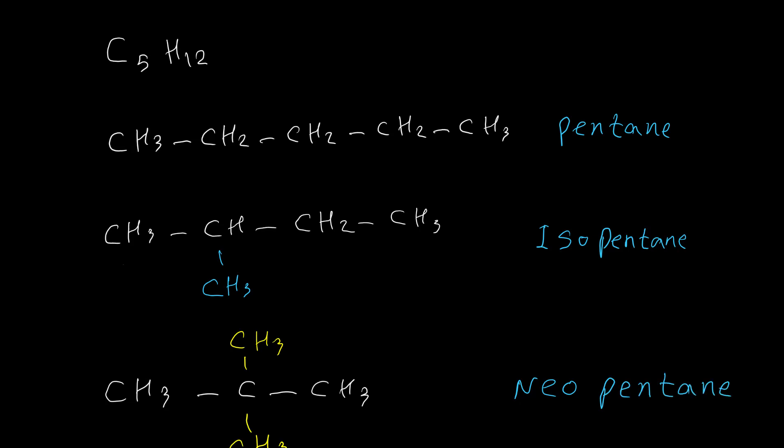So the first three alkanes have no isomers, butane has two isomers, and pentane has three isomers. For bigger alkanes we have more isomers, and we need a systematic method to derive them. For hexane we have five isomers and for heptane we have nine isomers. I'm going to explain how to derive all of them.